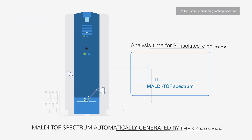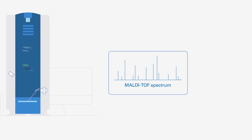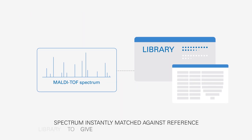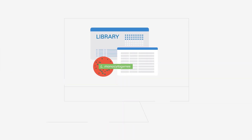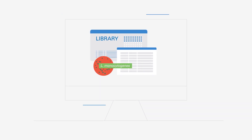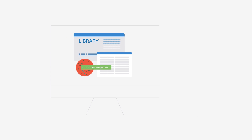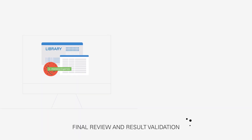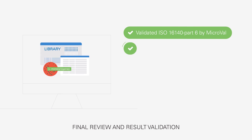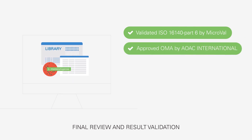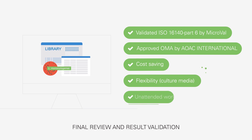Spectrum acquisition is performed automatically for all samples, plus a quality control spot. The acquired spectra are then matched to the reference library to give confirmation and identification. You can review and validate your results in accordance with the ISO 17025 standard. The MALDI Biotyper is validated by Microval according to the ISO 16140 Part 6 standard and is an approved official method of analysis by AOAC International. Confirmation and identification results are provided directly with no need for additional data interpretation.